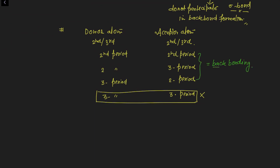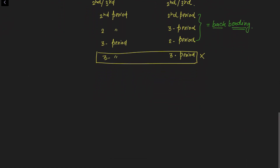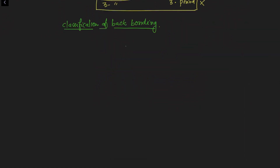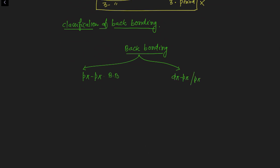Based on these combinations of atoms, we can classify back bonding into two types. The first type is p-pi–p-pi back bonding, and the second type is d-pi–p-pi or p-pi–d-pi back bonding. After this, if any molecule has the ability to form back bonding between its atoms, we can discuss the consequences of that back bonding.